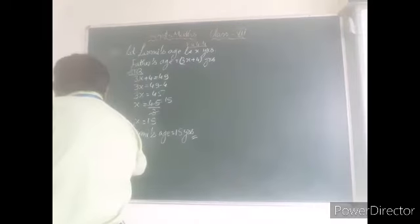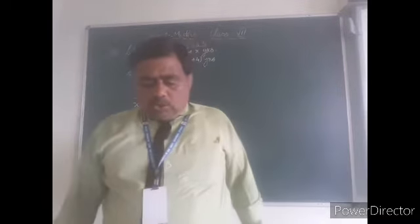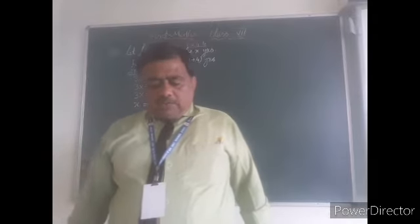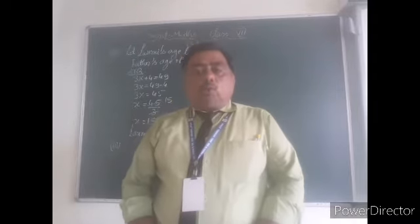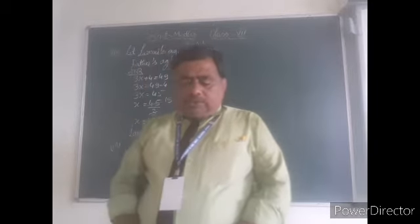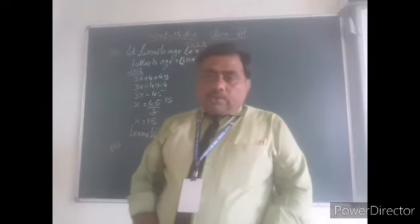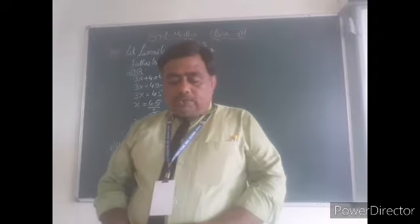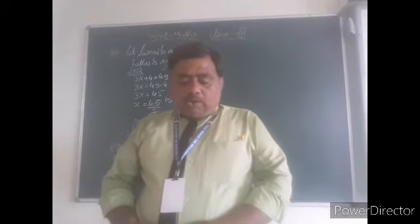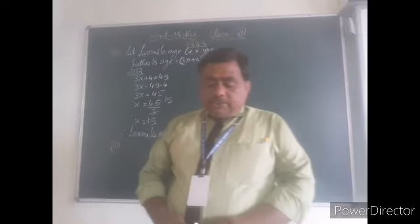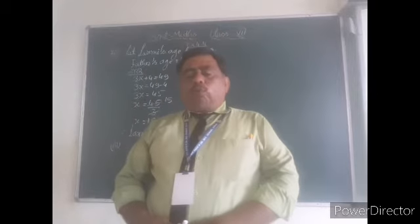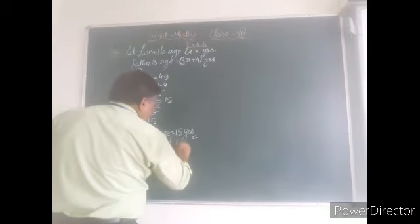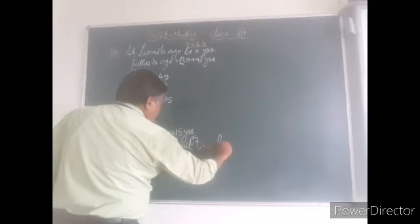Third part: people of Sundargram planted trees in the village garden. Some of the trees were fruit trees. The number of non-fruit trees were 2 more than 3 times the number of fruit trees. What was the number of fruit trees planted if the number of non-fruit trees planted was 77? So, let the number of fruit trees be X.